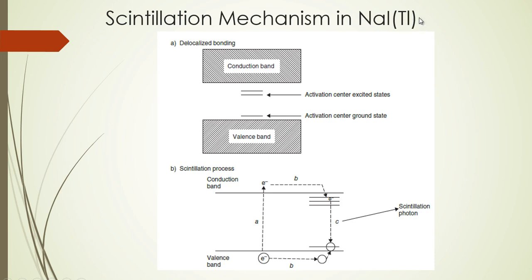When you add thallium atoms as the impurity, you get electron orbitals between these two bands. The higher orbitals are called activation center excited states, and the lower orbitals are called activation center ground states. These electron orbitals between the two bands are collectively called activation centers.